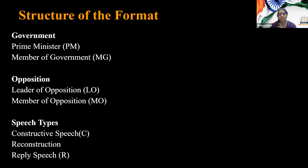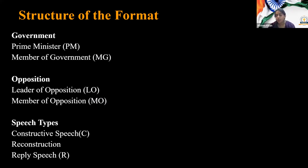Government has two debaters. The first speaker is called Prime Minister or PM. The second speaker is called Member of Government or MG. Opposition also has two debaters. Leader of Opposition is LO and the second speaker is Member of Opposition or MO. There are three kinds of speeches: constructive speech (C), reconstruction, and reply speech (R).